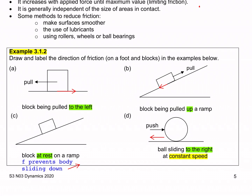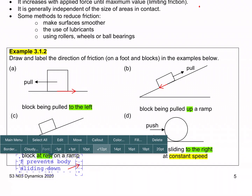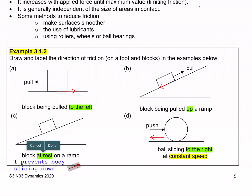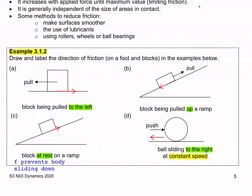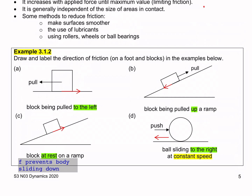Example c: The block is at rest on a ramp. If there was no friction, the block would slide downwards relative to the ramp. To prevent that, the frictional force acts upwards on the block, opposing the component of the weight acting down the slope.